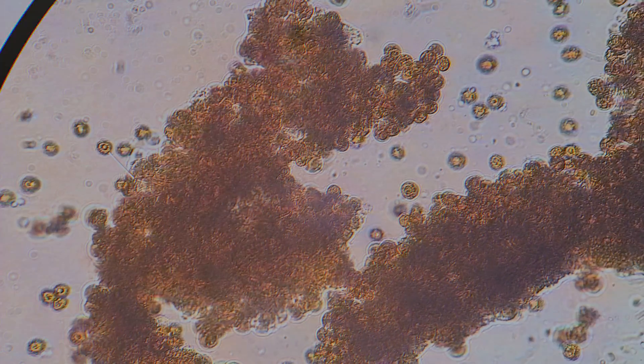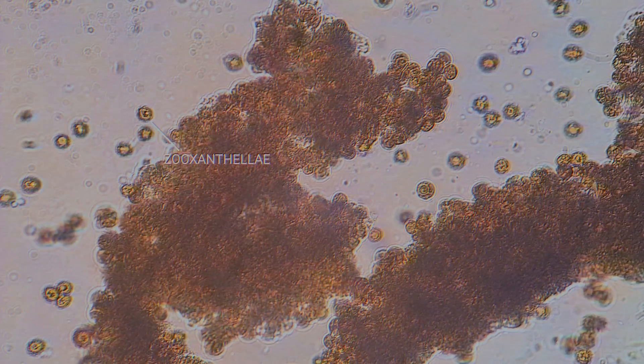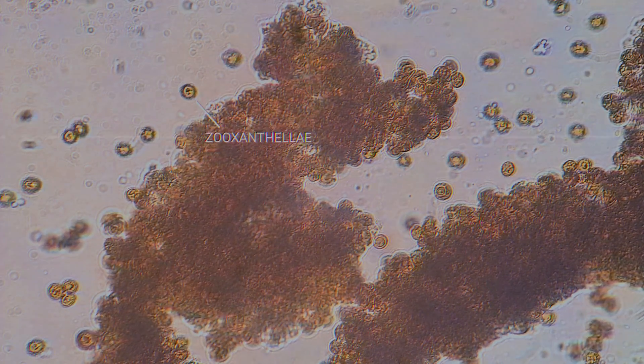There's a lot of weird things about coral polyps, but probably the weirdest thing about them is that they actually have another organism living inside them. There's an algae, it's called zooxanthellae, and it's living inside the tissues of the coral polyp.